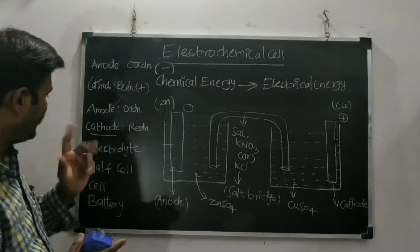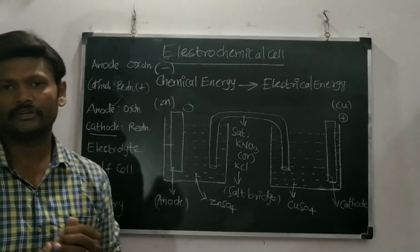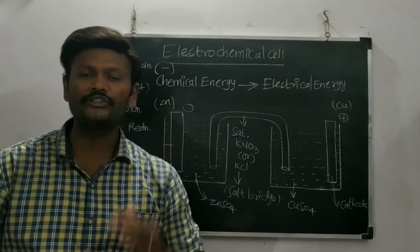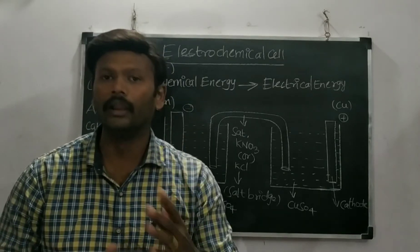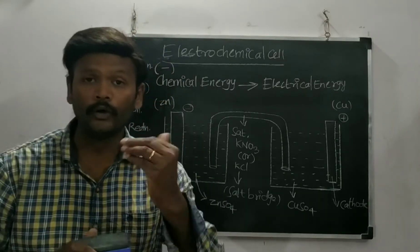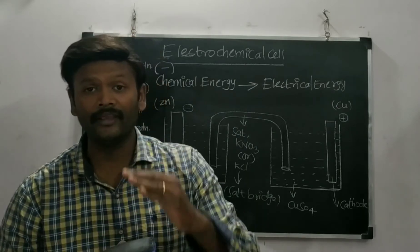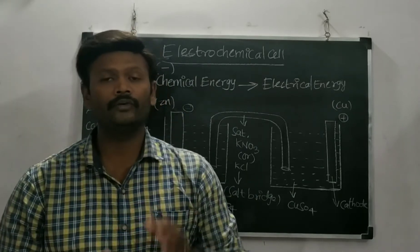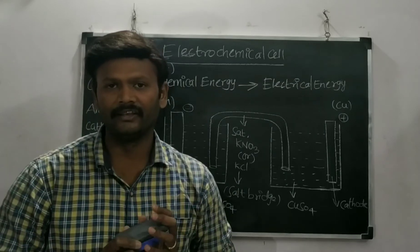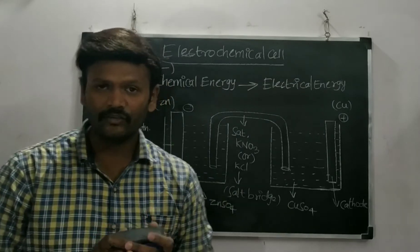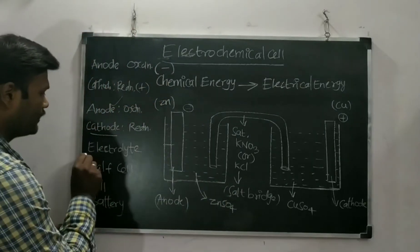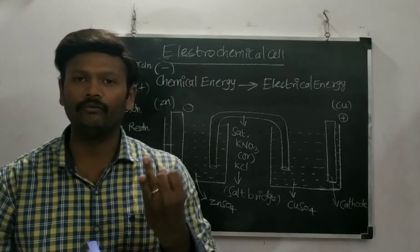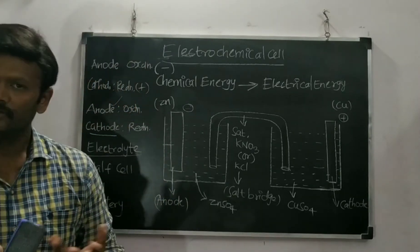Next is the electrolyte. Electrolytes are substances which are water-soluble, they produce ions, and they are responsible for the conduction of electricity. There may be strong electrolytes, weak electrolytes — many types of electrolytes are there.